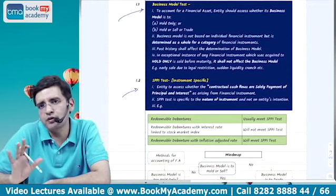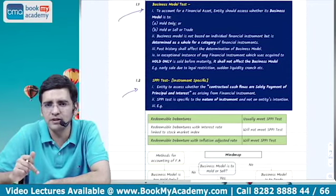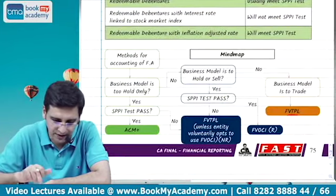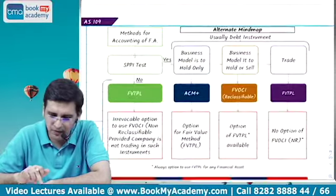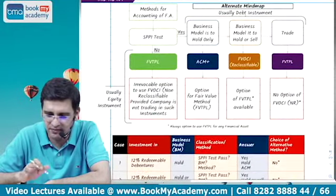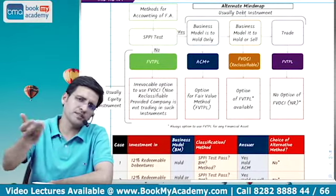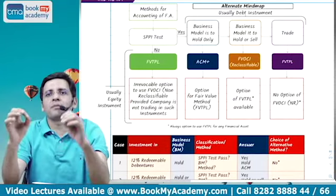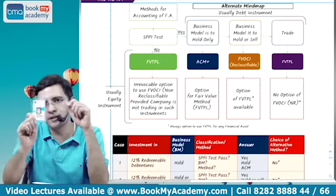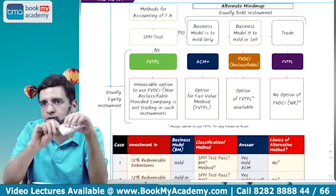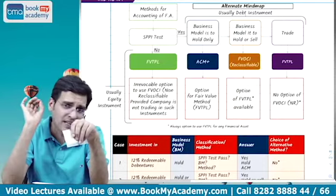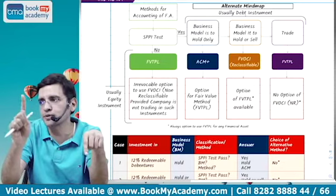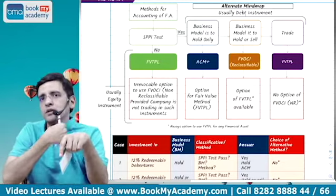Initial pages of the notes will be shared on the fast.edu.in download section where you can download and get a textual understanding. There is also a mind map from the institute module, and I have alternatively developed one which is easier to understand. What I say is: when you make a choice of method, first — what is the nature of this instrument? Will it give you purely principal and interest? If the answer is no, the cost method is ruled out and you have to use FVTPL only, except you have the option to use FVTOCI NR. If the SPPI test is satisfied, then you see the entity's business model: is it to hold only? Then use ACM. Hold or sell? Use FVTOCI R. To trade? Use FVTPL.